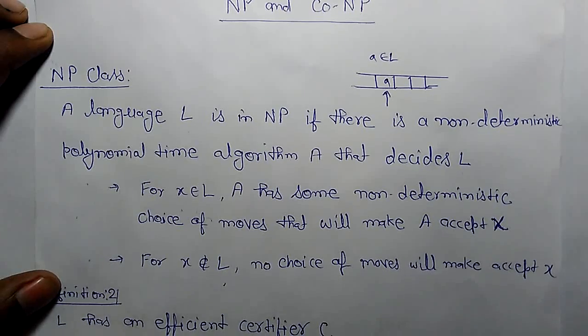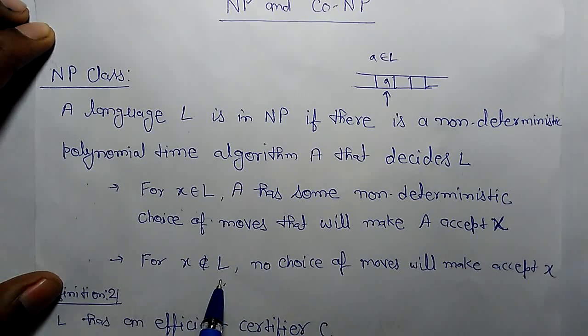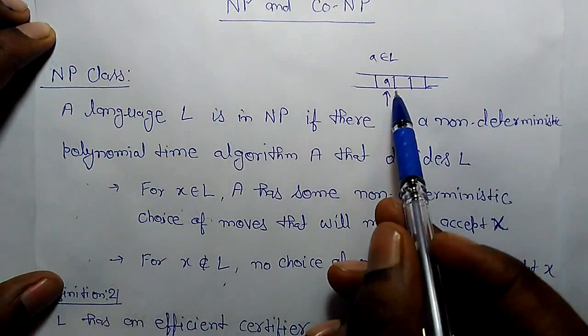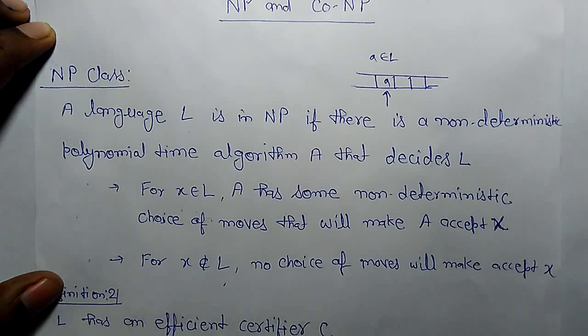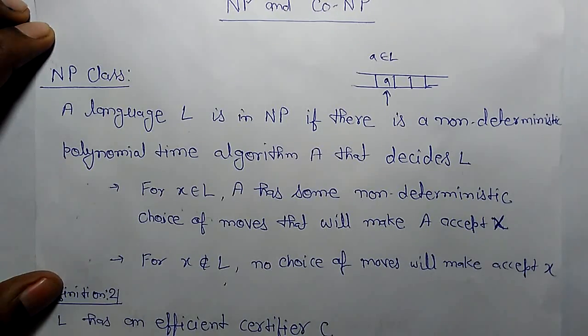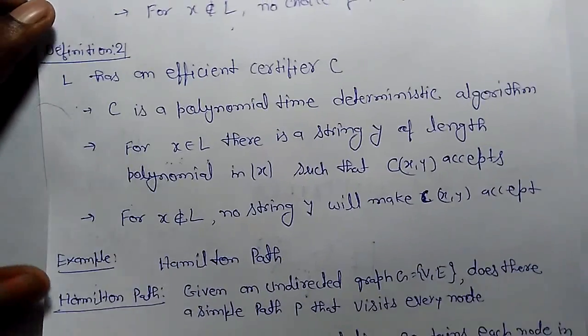For x which does not belong to the language, no choice of moves will make A accept x. If a string does not belong to the language, we have no choice of moves that will make A accept x. There is another definition of NP.